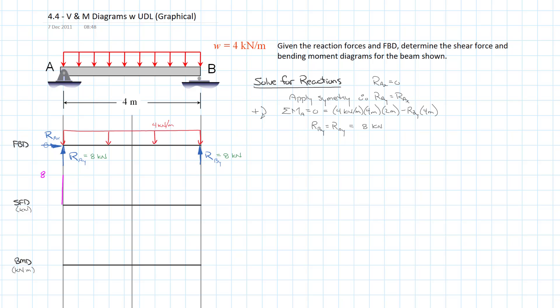From there, we have the uniformly distributed load. The shear force diagram is going to change as per the negative of the area under the load intensity diagram. A uniformly distributed load has a constant intensity, so it's going to cause a linear change in our shear force diagram, with the slope equal to the magnitude of the load intensity. It's pushing down, so we go negative — positive 4 kN/m causes a change in the negative direction. From A to B it's all uniform, so there are no discontinuities and we'll have a smooth curve.